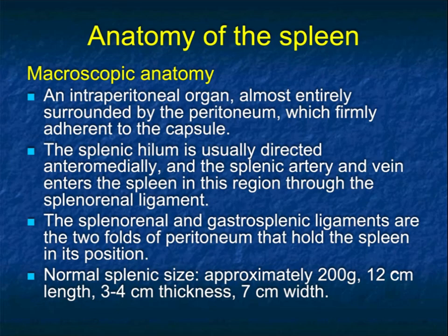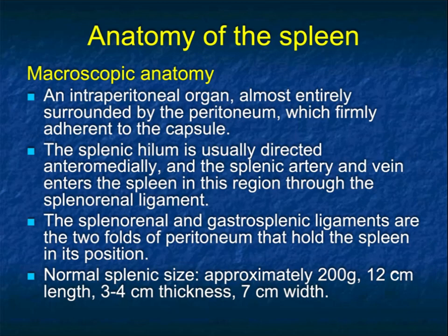Let's look at some basic things about the spleen — macroscopic anatomy. It's an intraperitoneal organ entirely surrounded by the peritoneum, which firmly attaches to the capsule of the spleen. The splenic hilum is usually directed anteromedially, and the splenic artery and vein enter the spleen in this region through the splenorenal ligament — considered the bare area of the spleen. The splenorenal and gastrosplenic ligaments are the two folds of peritoneum that hold the spleen in position.